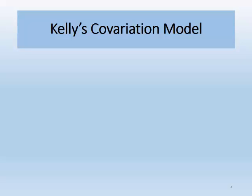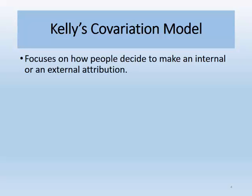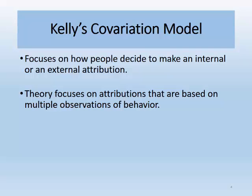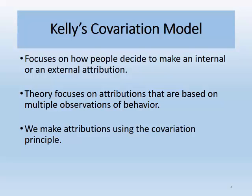The second theory of attribution is Kelly's covariation model, which focuses on how people decide whether to make an internal or external attribution, particularly in instances where you have multiple observations of behavior. We make attributions using the covariation principle, which tells us that in order for something to be the cause of a particular behavior, it must be present when the behavior occurs and absent when it does not occur.